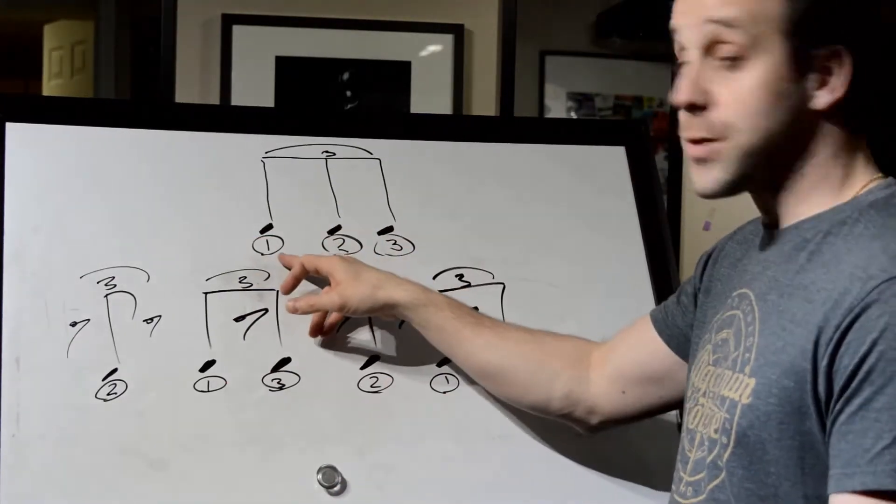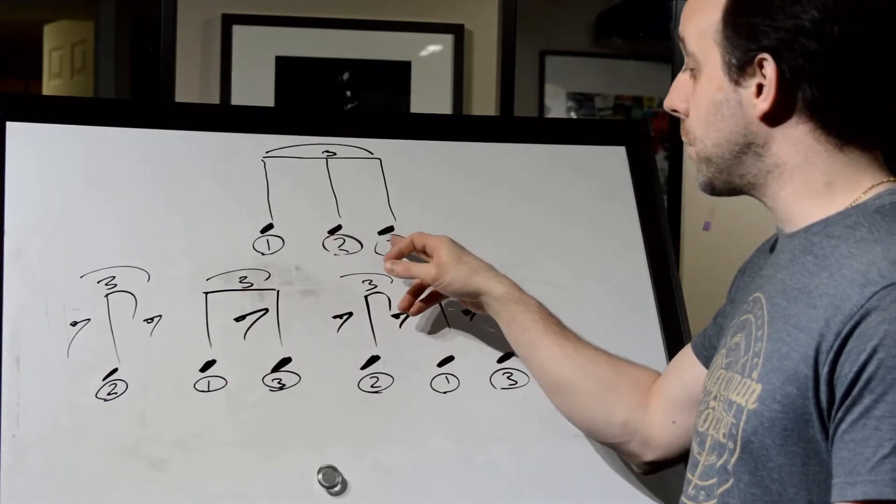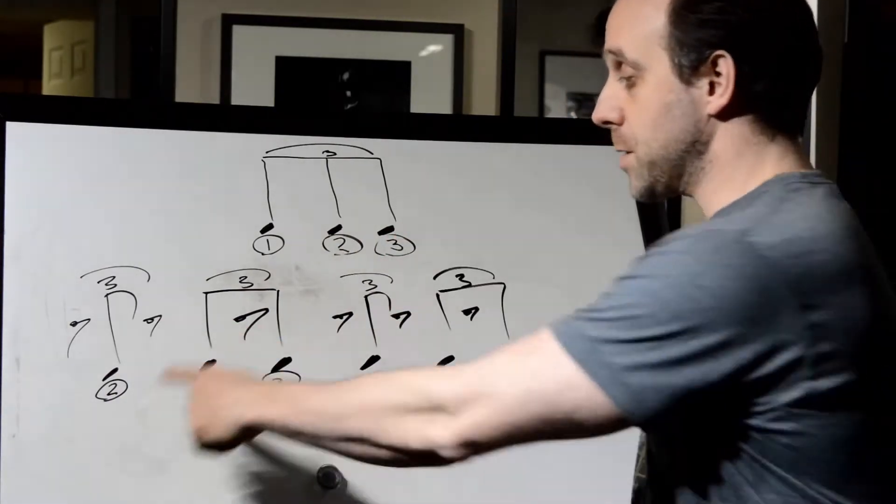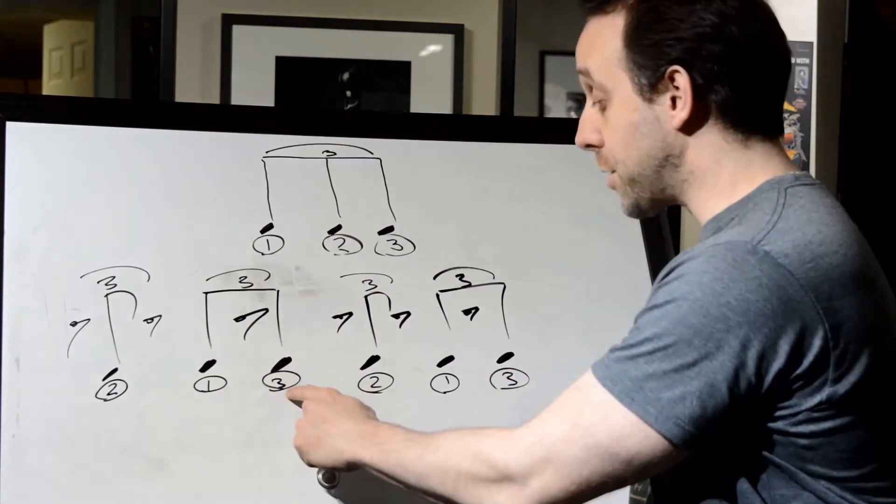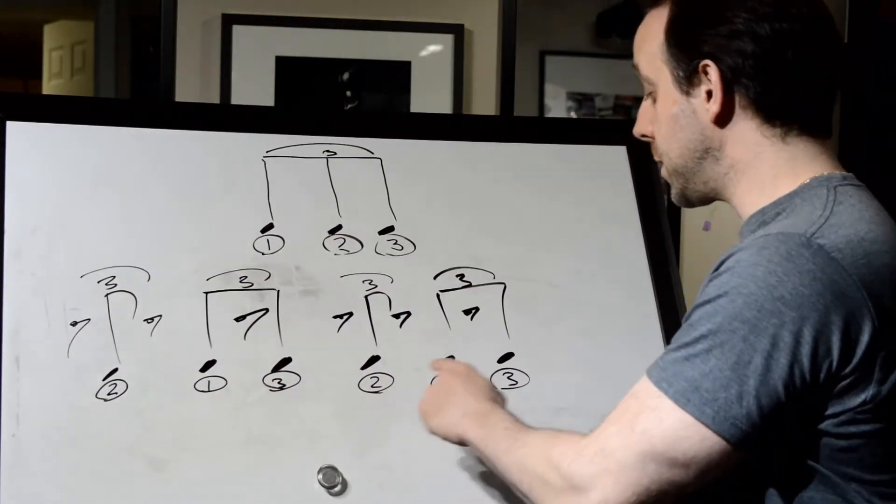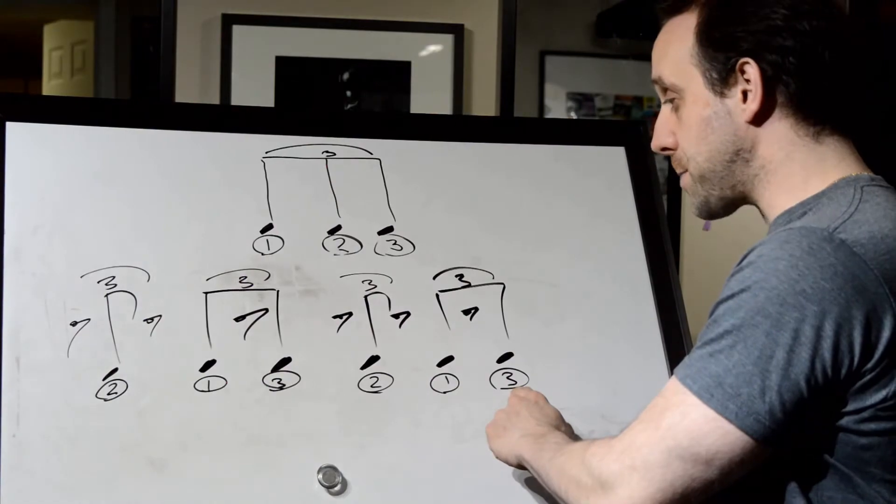If you look at the eighth note triplet, the first note, second note, third note, well, for an offbeat chord note triplet, we're starting on the second triplet, and then we're doing the first triplet, the third triplet, the second triplet, the first triplet, and the third triplet, right?